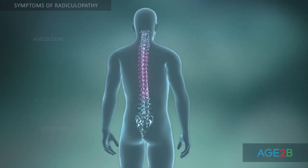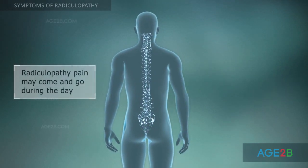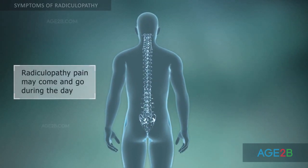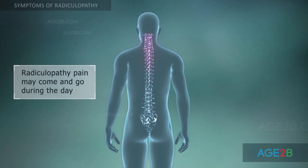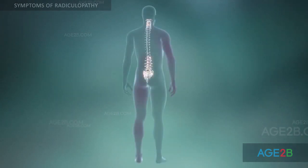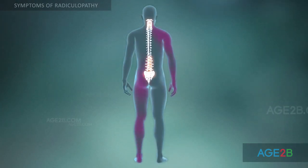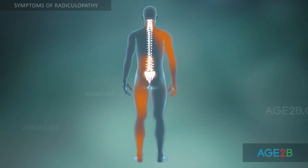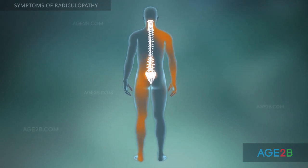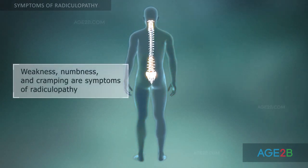Back pain in radiculopathy is usually intermittent. It may come and go during the day. Besides pain, radiculopathy can cause weakness, numbness, and cramping in the legs and arms. These conditions arise due to nerve compression.